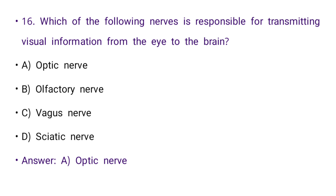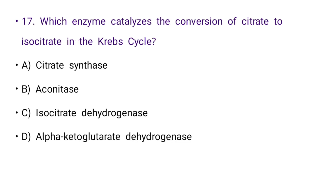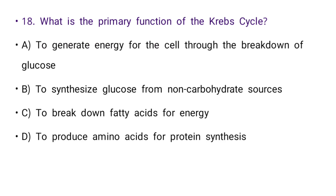Next: Which enzyme catalyzes the conversion of citrate to isocitrate in the Krebs cycle? Options: citrate synthase, aconitase, isocitrate dehydrogenase, or alpha-ketoglutarase. The right answer is B: aconitase.